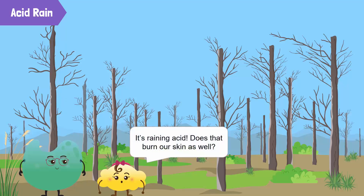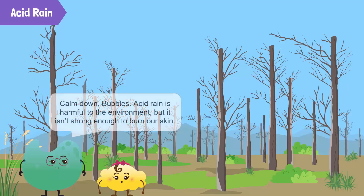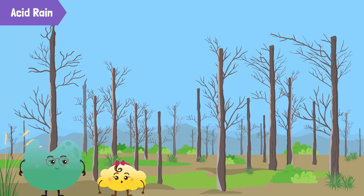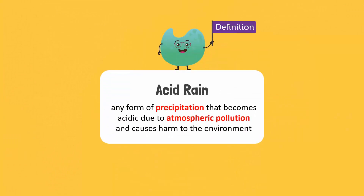Mrs. Coco, what? It's raining acid? Does that burn our skin as well? Calm down, Bubbles. Acid rain is harmful to the environment, but it isn't strong enough to burn our skin. Acid rain is any form of precipitation — like rain, snowfall, drizzle or hail — that can become acidic due to atmospheric pollution, and this can result in harm to the environment.